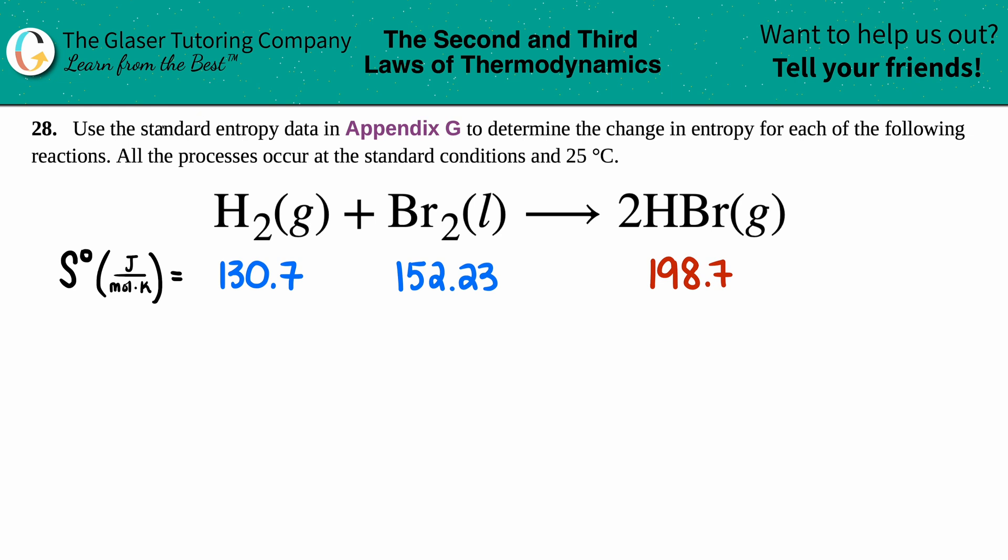Number 28: Use the standard entropy data in Appendix G to determine the change in entropy for each of the following reactions. All the processes occur at the standard conditions and at 25 degrees Celsius. Okay, so we just want to find that change in entropy, which is a delta S value. Since we're using standard values at the back of the textbook, Appendix G, we're solving for a standard delta S, which means I have to include that notation here.